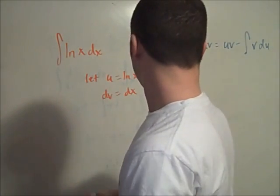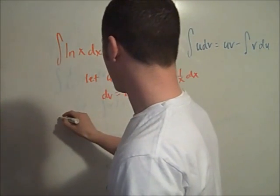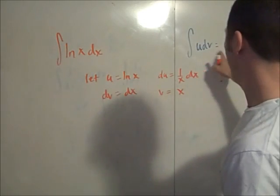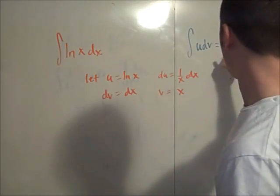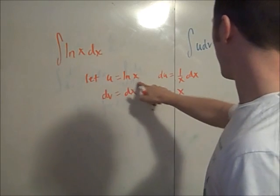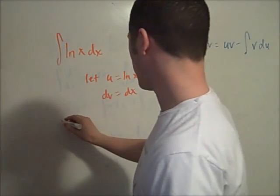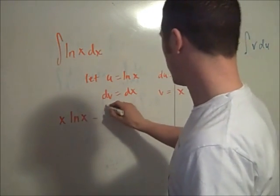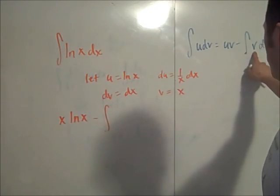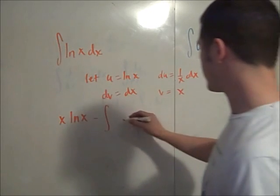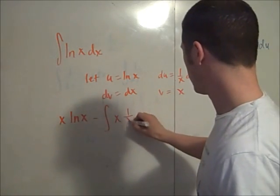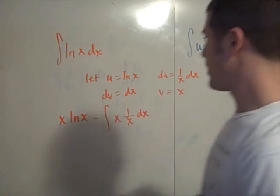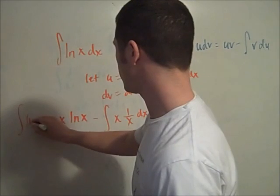We're going to say that this is the same u times v is log x times x, or x log x, I'll say. This is minus the integral of v du. So, v is x and du is 1 over x dx. This has to be, this is equal to the integral of log x dx.